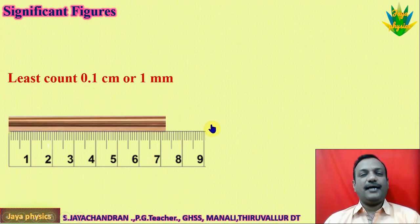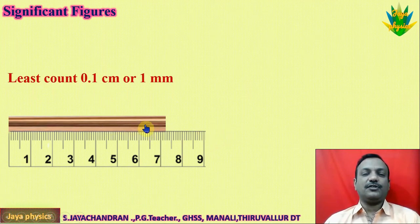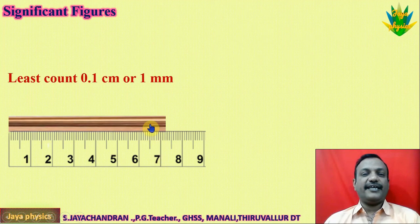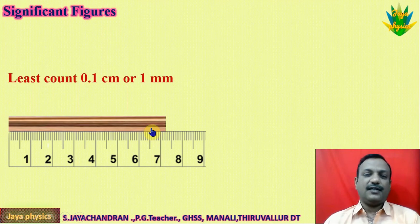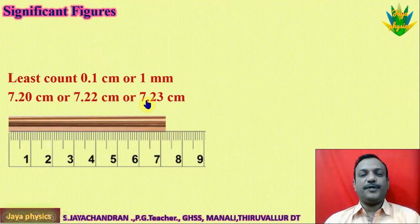Now I am asking three students — one boy, two girls, and Mary — three students to measure the length of this object. They are taking four readings each. When you measure four times, you can find the mean, which is the average. That is the result.